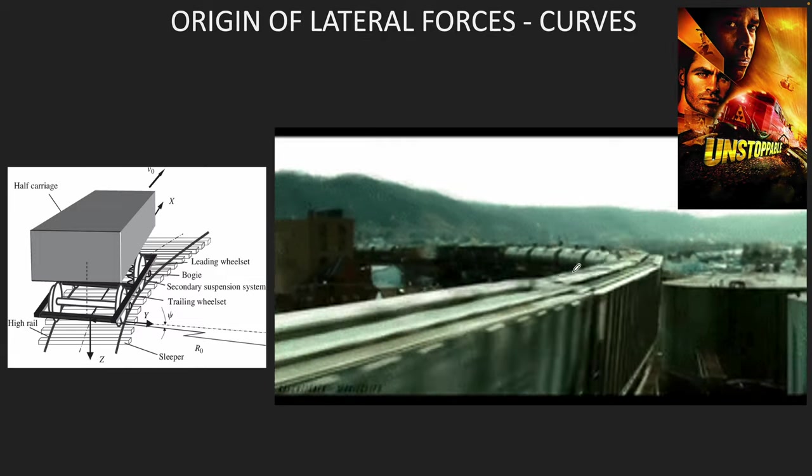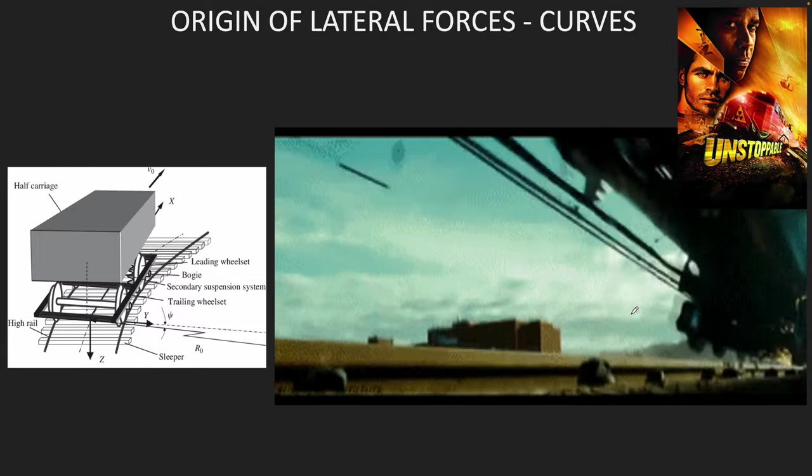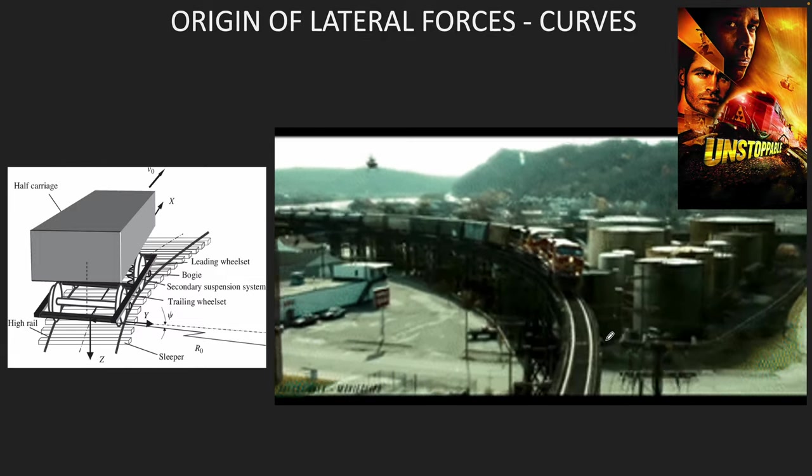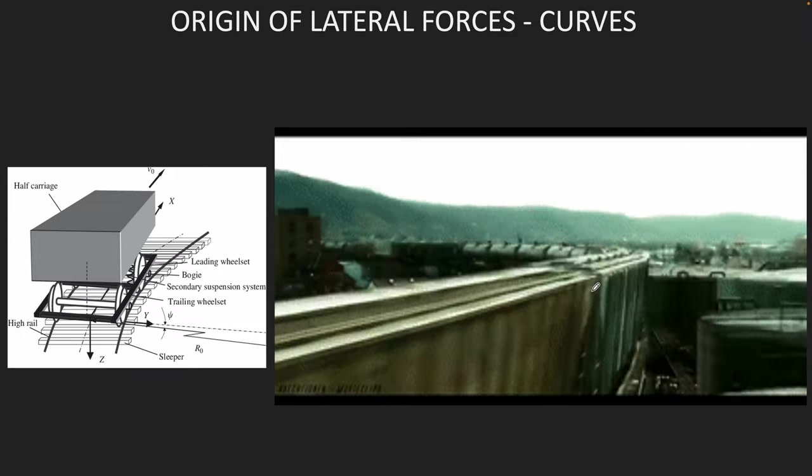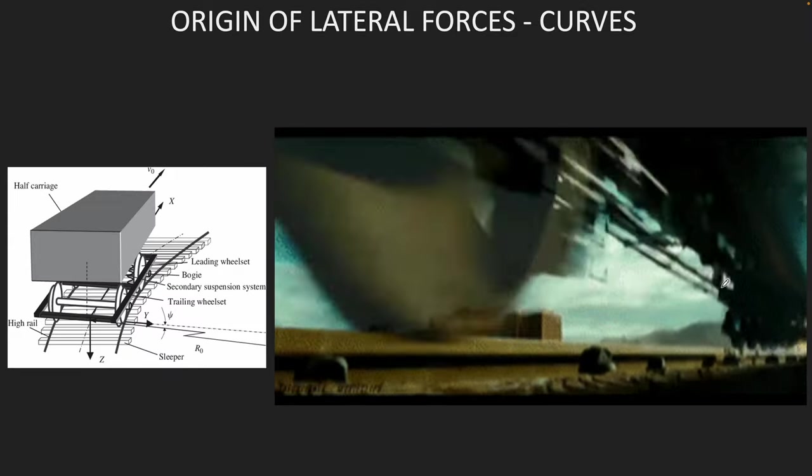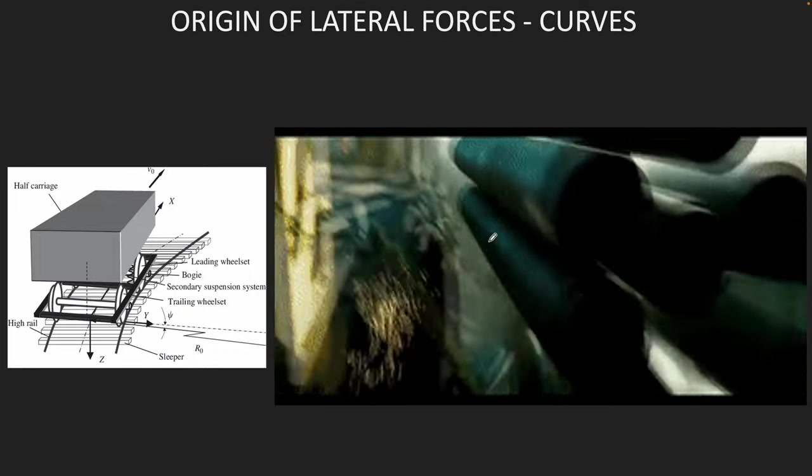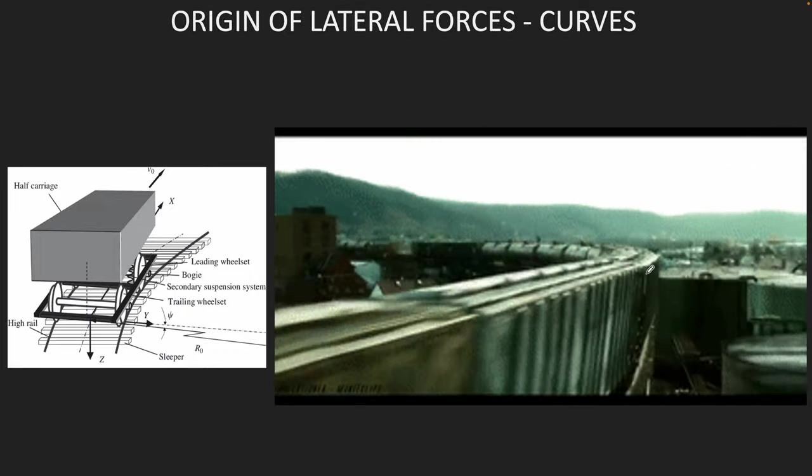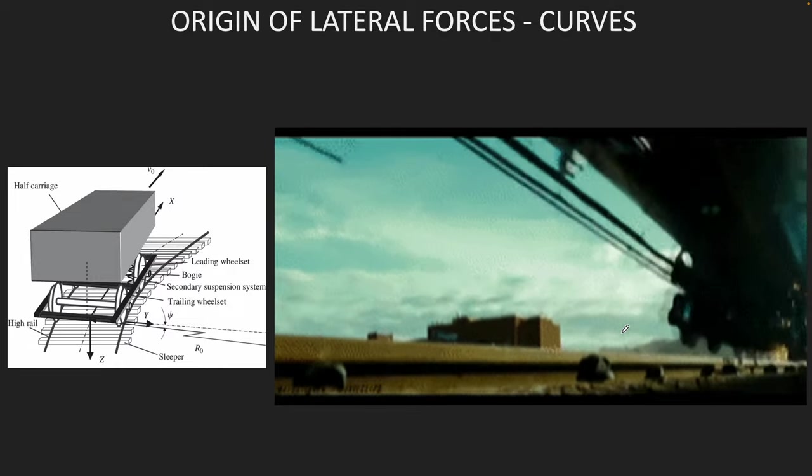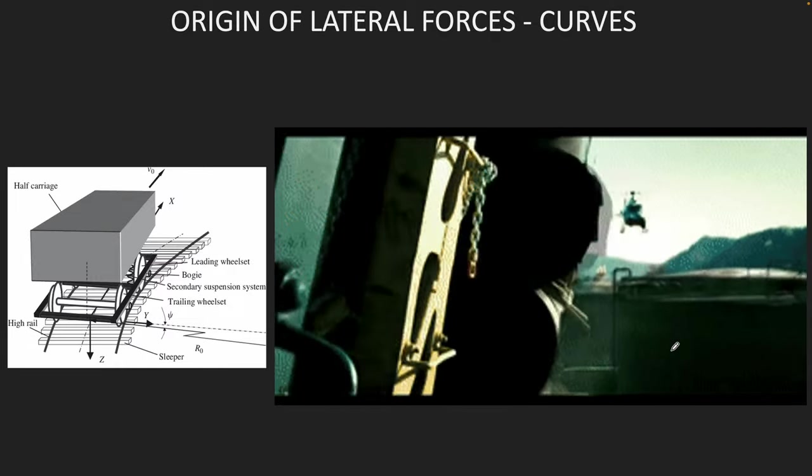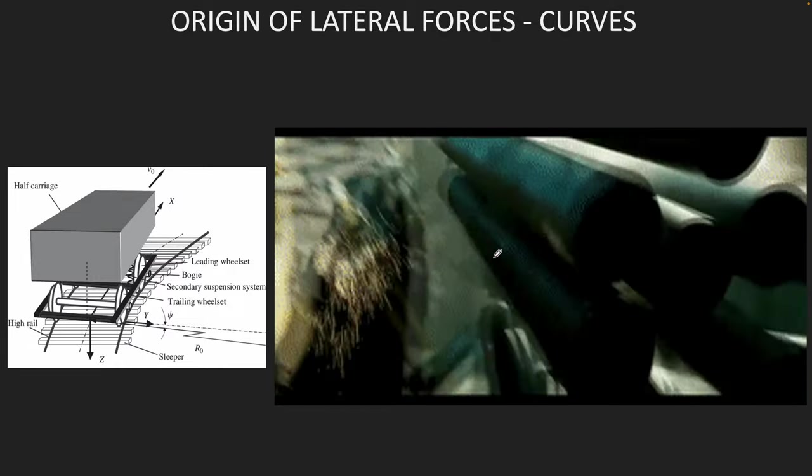There's actually a movie called Unstoppable which perfectly portrays this. A speeding train is going over a curve at speeds higher than safe speeds and you can see that the lateral forces have built so much that the inner wheel literally lifts off the track and stuff falls off the train. This picture quite accurately portrays increased lateral forces that a wheel experiences when it goes over a curve.